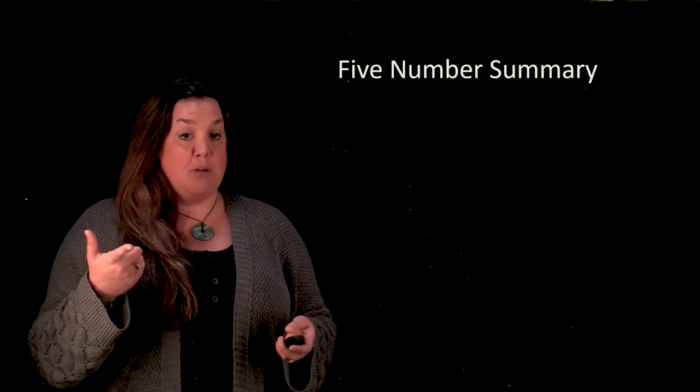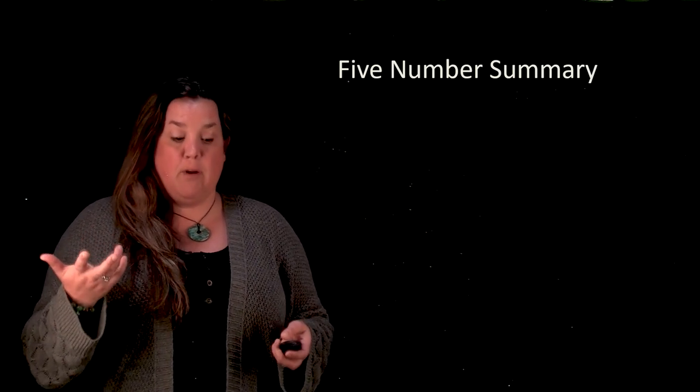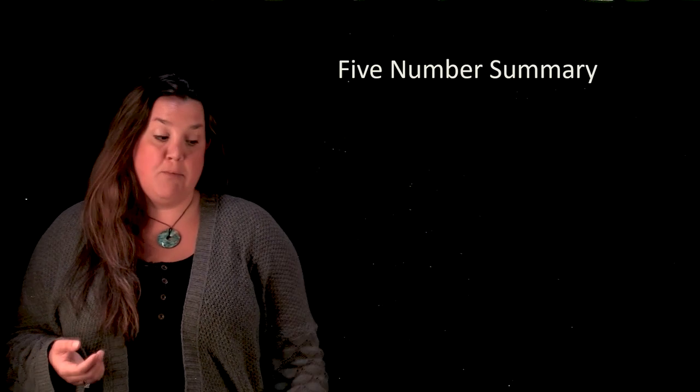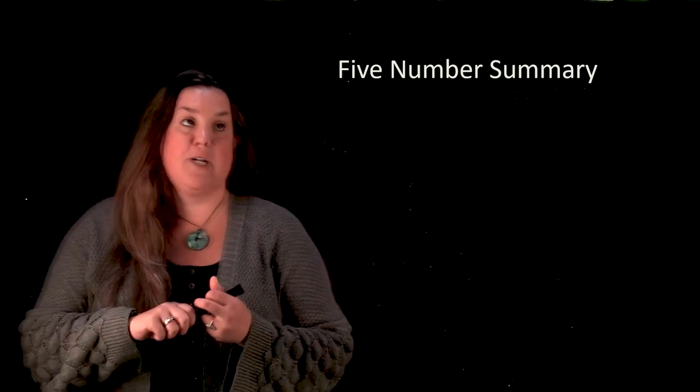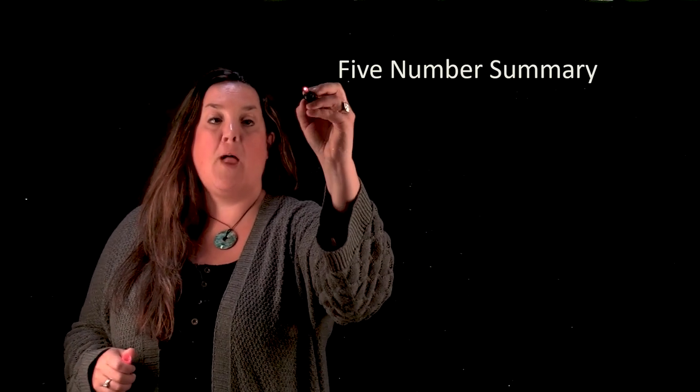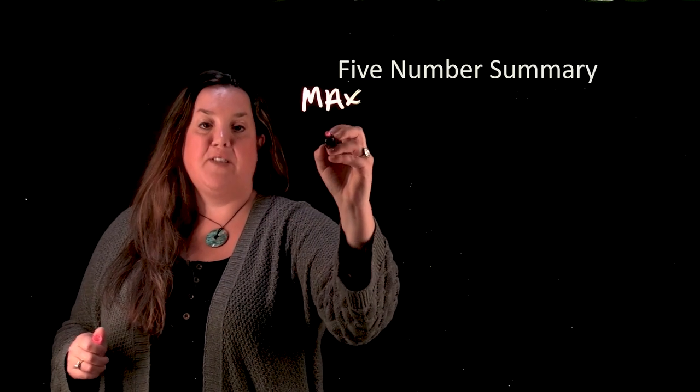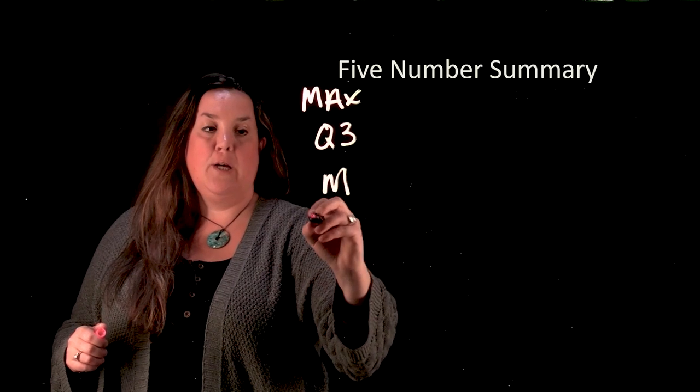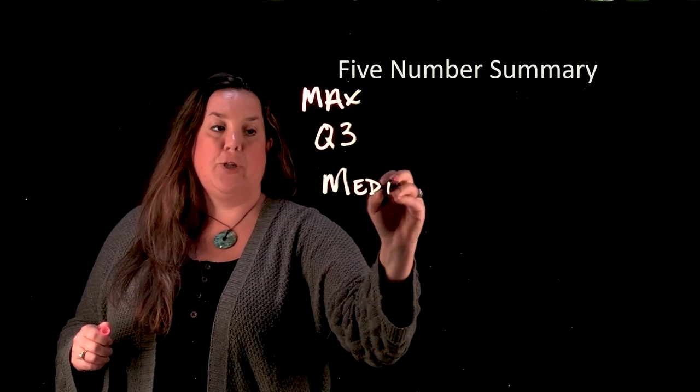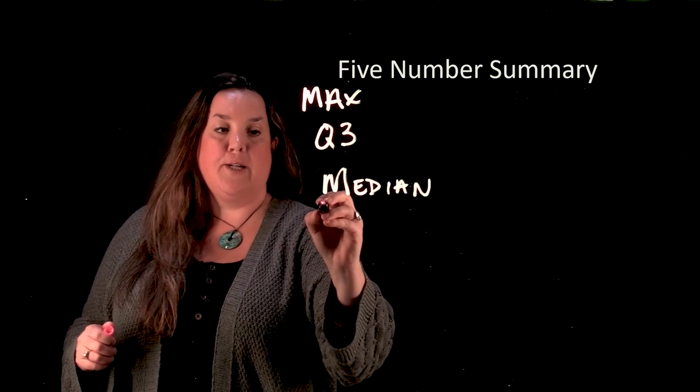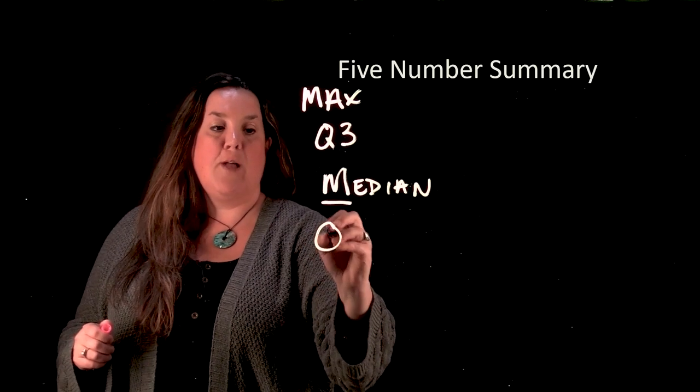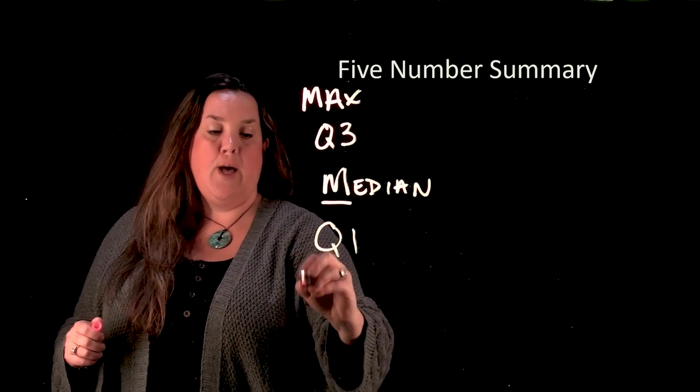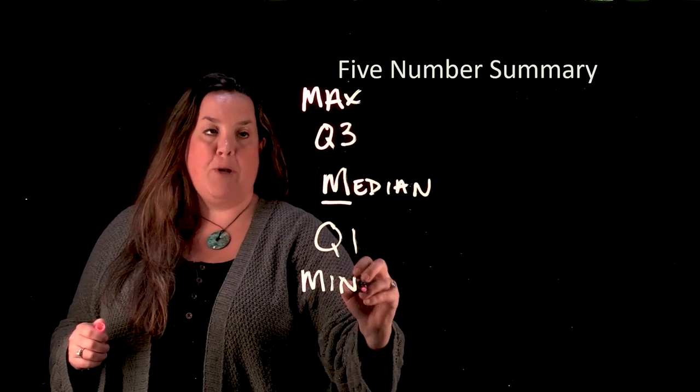That numeric summary that we're going to look at is called the five-number summary. So the five-number summary has five numbers connected to it. So we'll have the maximum, we'll have something called Q3, we'll have a median, which is usually just shorthanded to M, we'll have something called Q1, and then we'll have a measurement called the minimum.